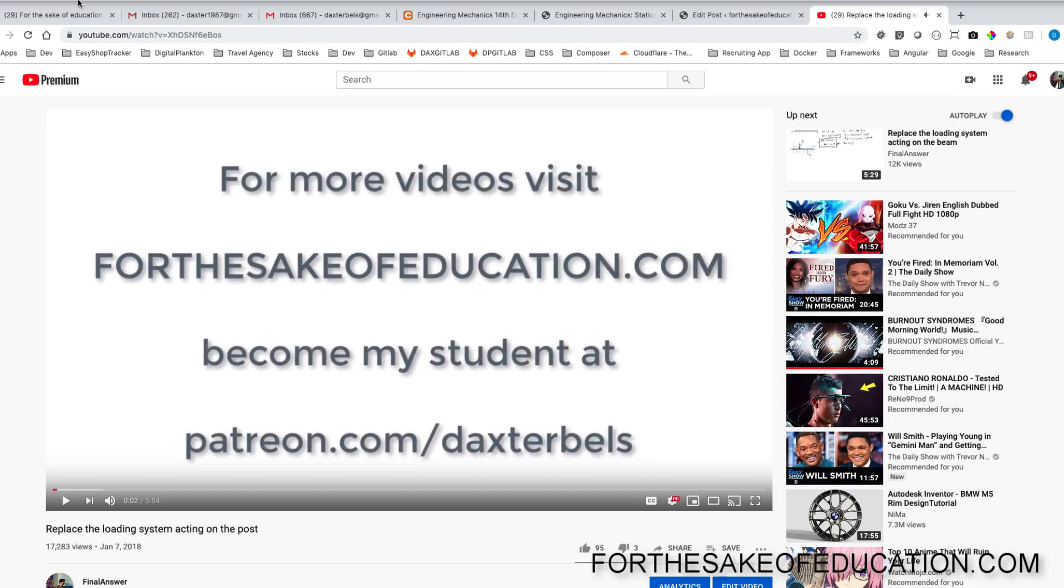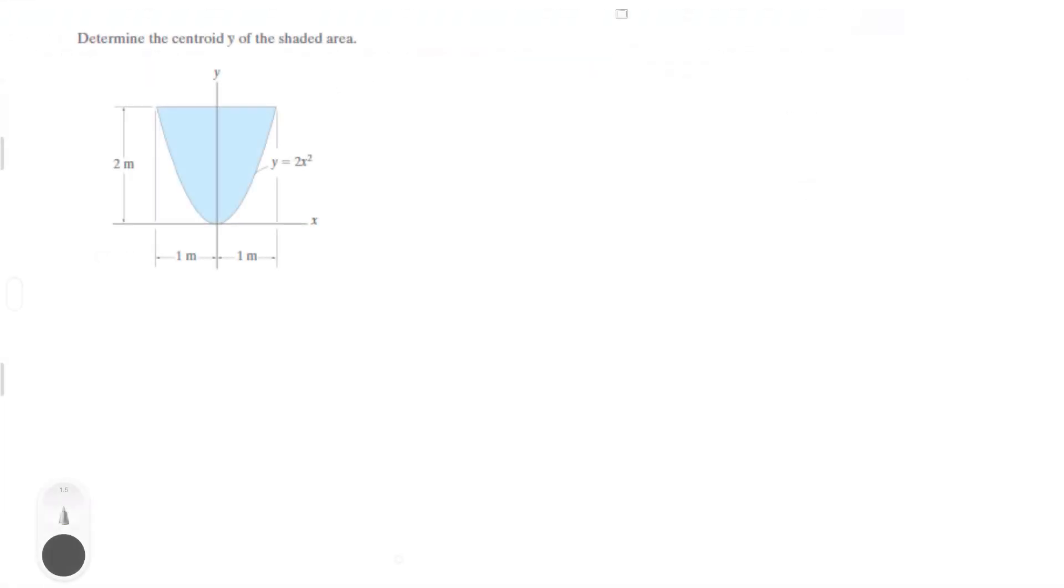Alright guys, let's do this problem that says determine the centroid ȳ of the shaded area. So notice that it's only asking for the y, it's not asking for the x, but it's going to become painfully obvious why in a second. Because when you're doing these problems, remember that the formula is x̄ is equal to the integral of the area of x curly dA.